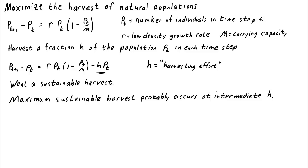To do this, we'll need to combine what we know about maximizing functions with what we know about discrete dynamical systems and finding equilibria. The reason equilibria will be important is because we want a sustainable harvest, so we want to look at the amount of harvest after the system has settled down into an equilibrium.